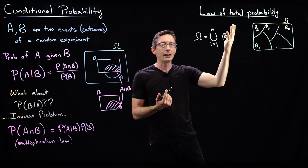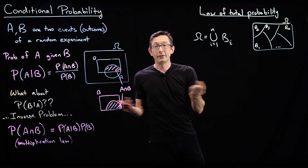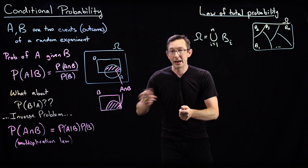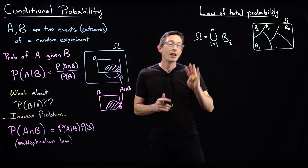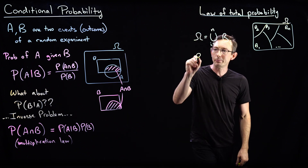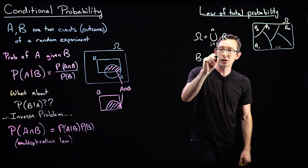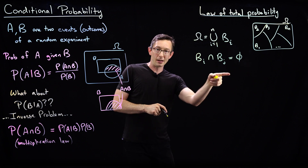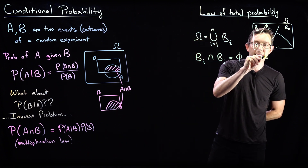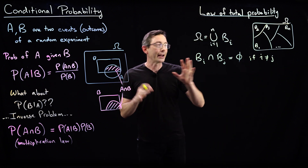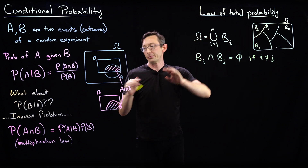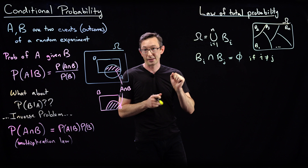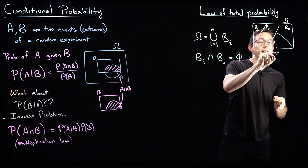For example, omega could be all 52 cards in a deck when you flip one card. The Bs could be: it's a spade, it's a club, it's a diamond, it's a heart — four disjoint sets. Disjoint means that Bi intersection Bj is the empty set. If it's a heart, it can't be a spade. If it's a club, it can't be a heart, and so on when i does not equal j. These sets have no overlap — there's no intersection between them — they're disjoint.